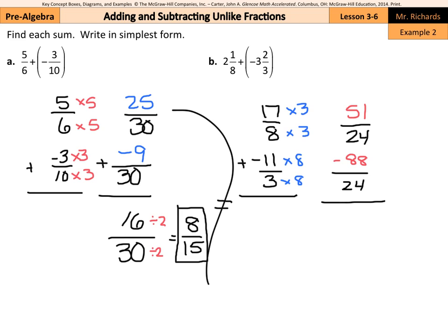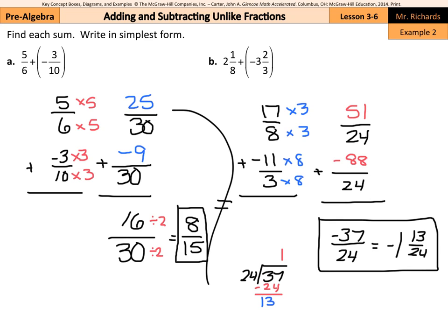Now that I have the common denominator of 24, and I fixed my numerators, 51 plus a negative 88 is negative 37 over that 24. We can work to get this into a mixed number as well by putting our 37 on the inside, 24 on the outside, goes in once, subtract the 24, and we get 13. So, negative 37 twenty-fourths is also equal to negative 1 and 13 twenty-fourths, and that is our sum for this question.